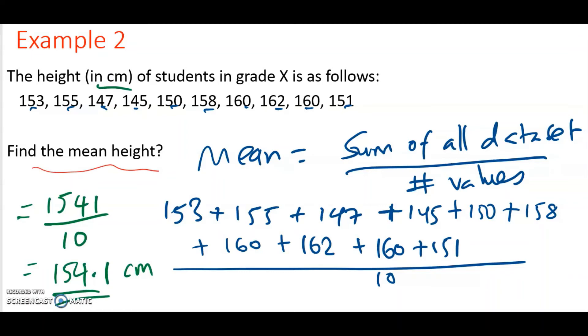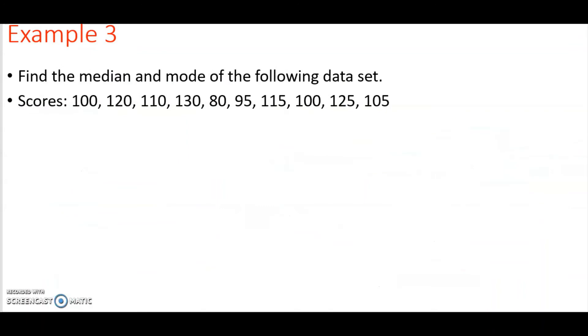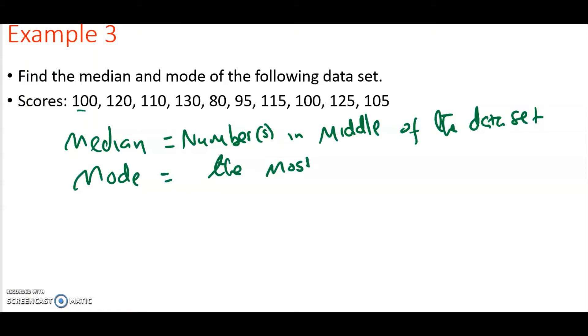Let's move to the next example. In this example, we are asked to find the median and the mode of the following data set. So unlike mean, median is the number in the middle. It can be number or numbers in the middle of the data set. And the mode is the most frequent number, the most common number in the data set. As long as you know these definitions, then it is easy to identify.